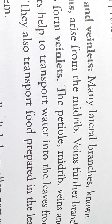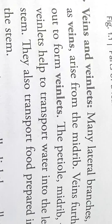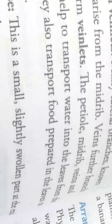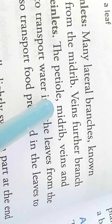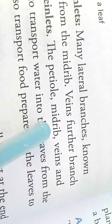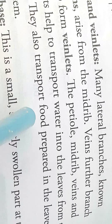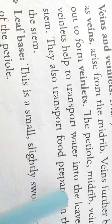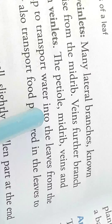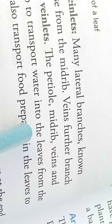So normally the petiole, midrib, veins and veinlets help to transport water into the leaves. Which parts of the plant transport water into the leaves? These are the petiole, midrib, veins and veinlets. They also transport food prepared in the leaves to the stem.